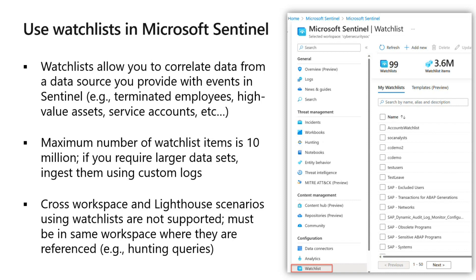Watch lists are stored in Sentinel as name-value pairs, and they are cached so that the performance impact is very minimal with very low latency. The maximum number of watch list items you can have in your Sentinel environment is 10 million. If you have more than 10 million entities, you can ingest them using custom logs.